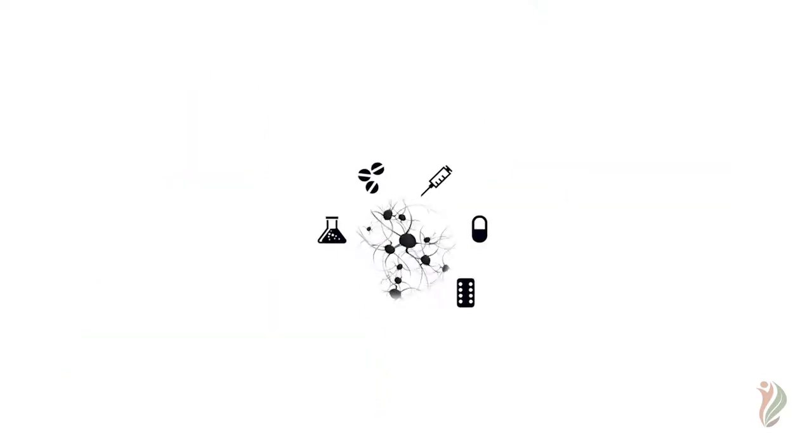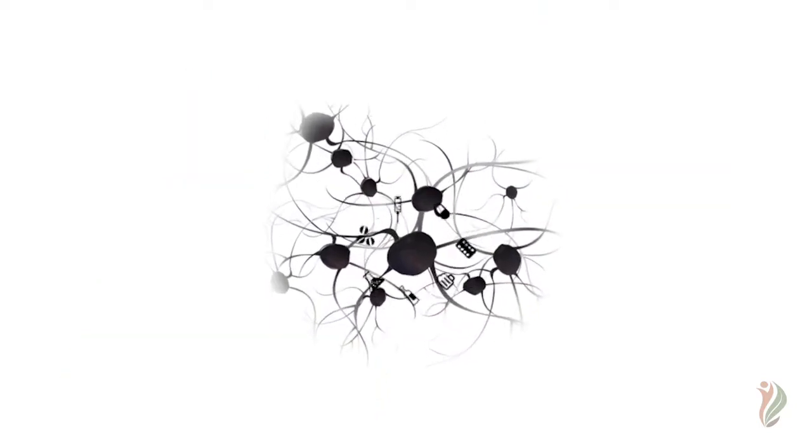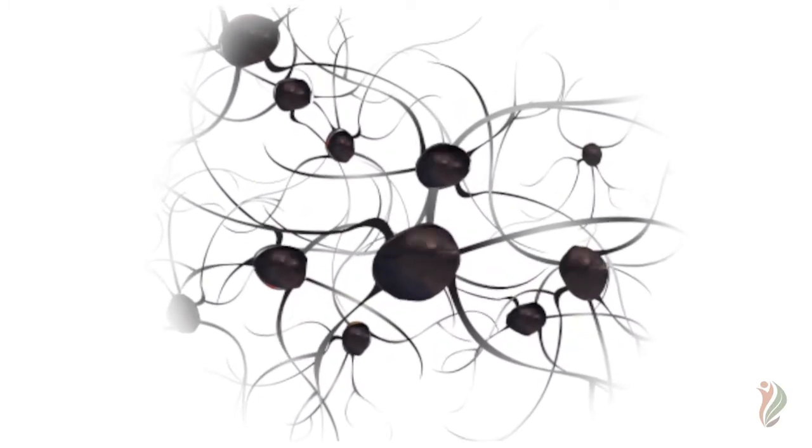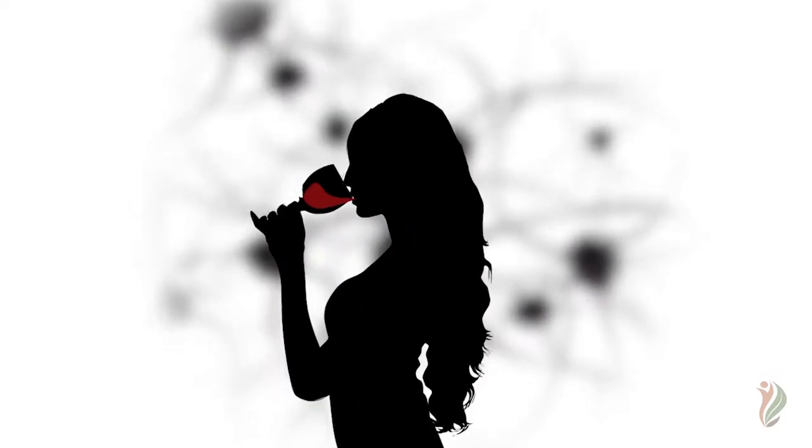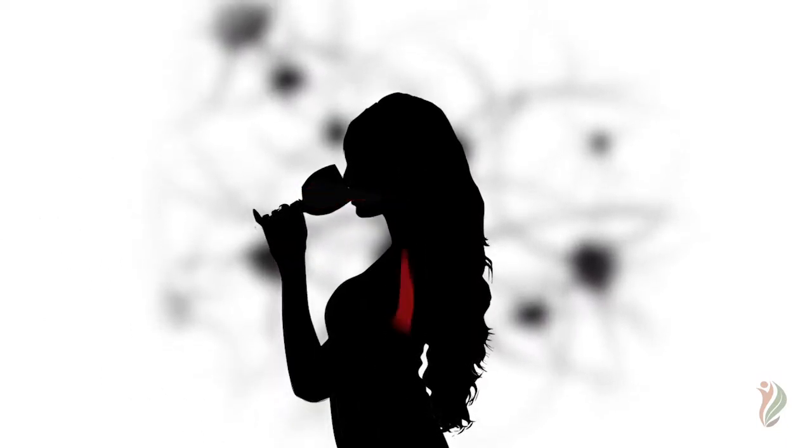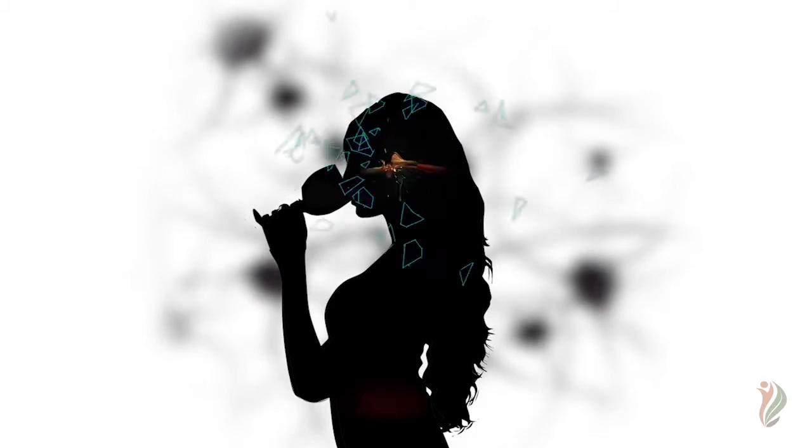So when drugs and alcohol are first administered into the system, there's a large surge of a neurotransmitter called dopamine. Dopamine is primarily responsible for a lot of your cognitive functions, movement, and some senses of euphoria, but not to the scale of when you're actually using drugs or alcohol.